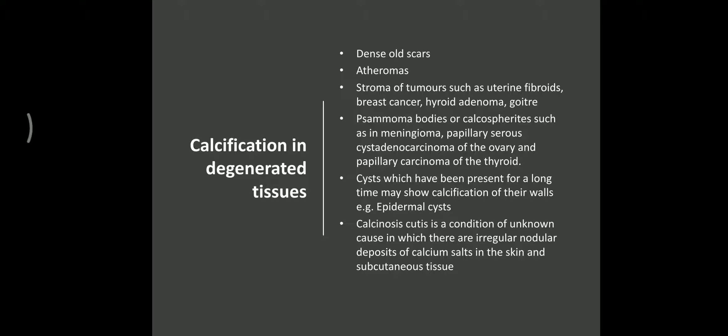In the case of Monckeberg sclerosis, there is deposition of calcium salt in the muscular arteries, especially in the middle layer — the tunica media. This condition occurs in elderly persons.